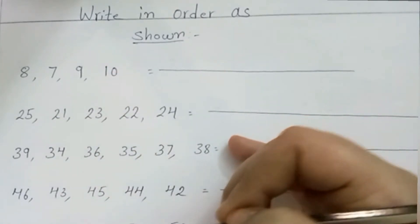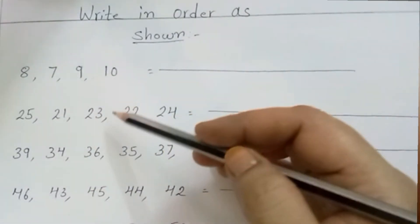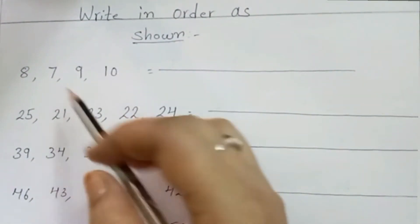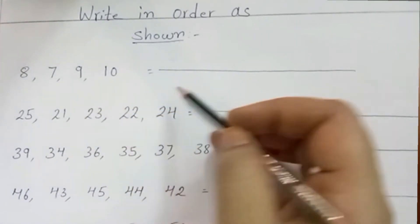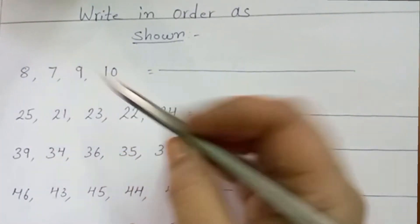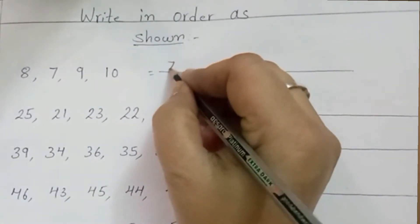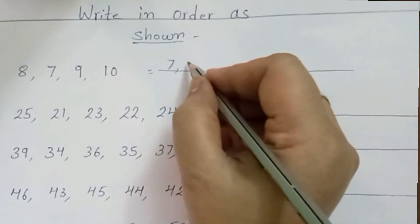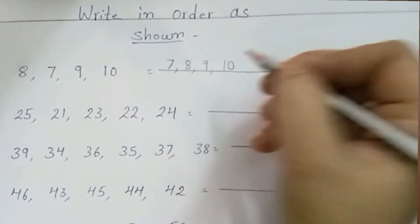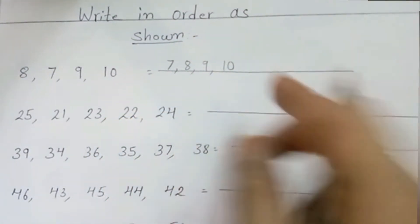Children, these numbers are jumbled. So you have to write these numbers in order. In the first line, tell me which is the smallest number? 7. Yes, 7 is the smallest number. So you have to write here 7, then 8, 9, and 10. So children, you have to write small to big. Understood children?